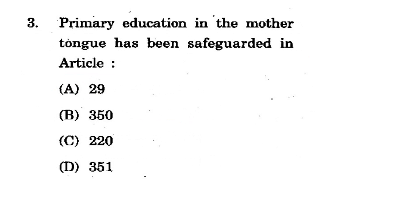Primary education in mother tongue has been safeguarded under which article? We can have the instruction in mother tongue - this has been safeguarded under which article? The options are 29, 350, 220, 351. The correct answer is option B - Article 350.